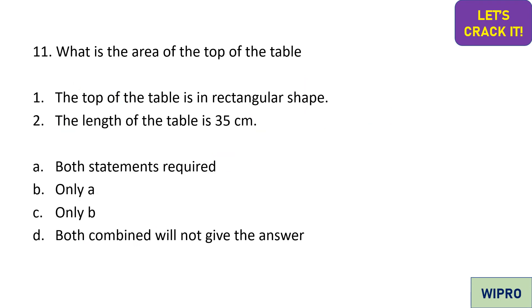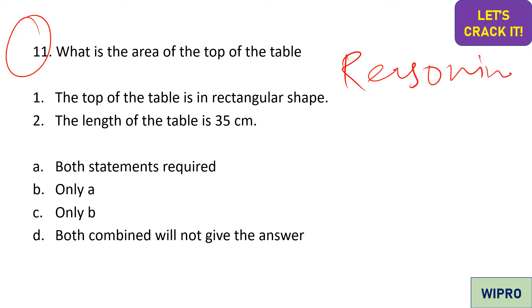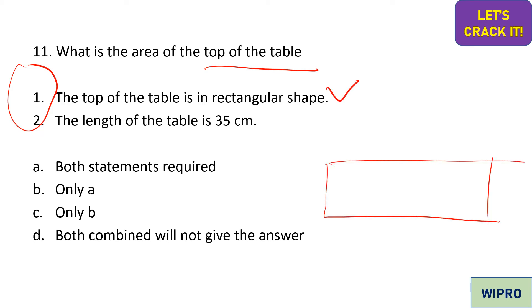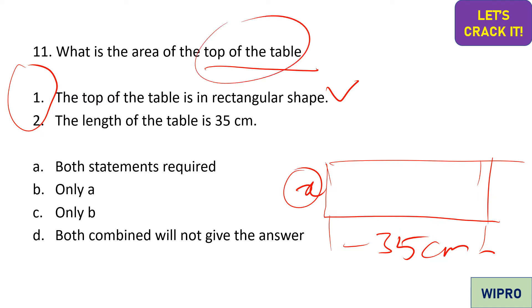Next are statement-sufficiency questions — very common in the logical/reasoning section. The question asks: 'What is the area of the top of the table?' Statement 1: the top is rectangular in shape. Statement 2: the length of the table is 35 centimeters. We have no clue about the breadth, and we cannot find the area with only the length. So option D is correct — both statements together are still not sufficient.